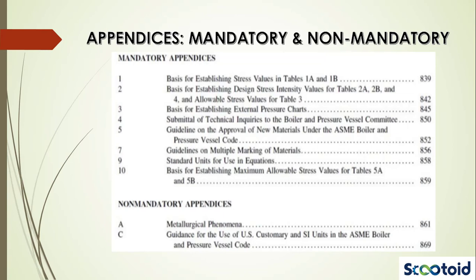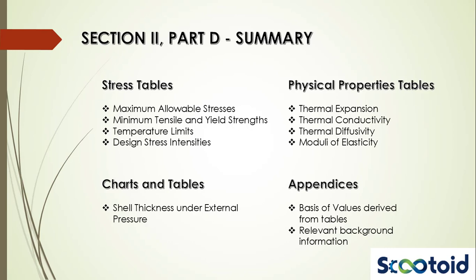Mandatory appendices provide the basis for the establishment of the various values used in the tables and charts in Section 2, Part D. They also provide guidelines for the estimation of properties during the evaluation of new material or material which isn't covered in the ASME BPVC. Non-mandatory appendices provide background information which could be of use to the designer.